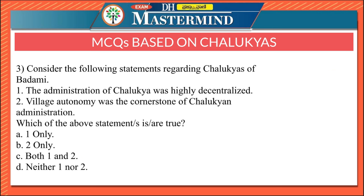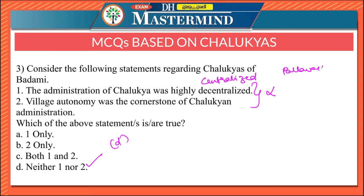The third question: regarding the Chalukyas of Badami, the administration of the Chalukyas was highly decentralized, and village autonomy was the cornerstone of Chalukyan administration. Both statements are false, so the right option is Option D, neither 1 nor 2. The administration of the Chalukyas was actually highly centralized, unlike the Pallavas and Cholas which were highly decentralized. Village autonomy was also absent under Chalukyan administration.